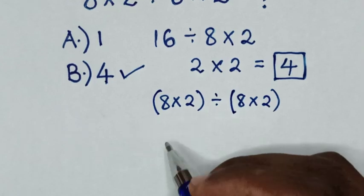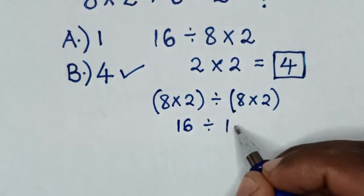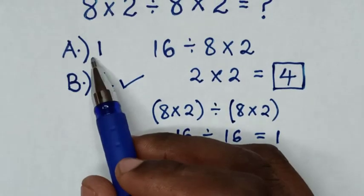So it would be 8 times 2 is 16, divided by 8 times 2 is 16. So this divided by this is equal to 1, then it would be A.